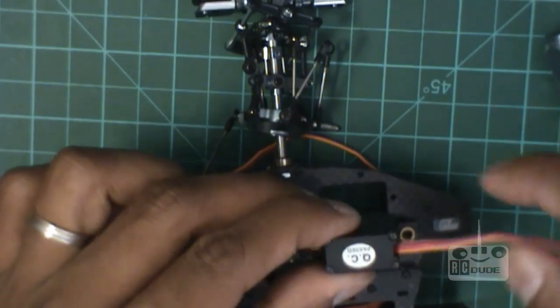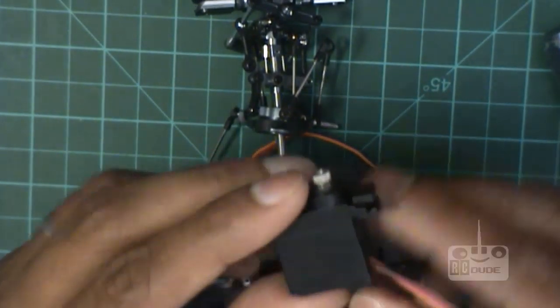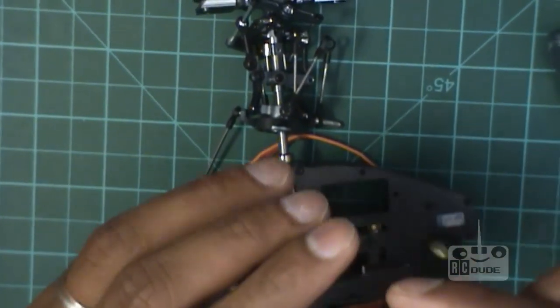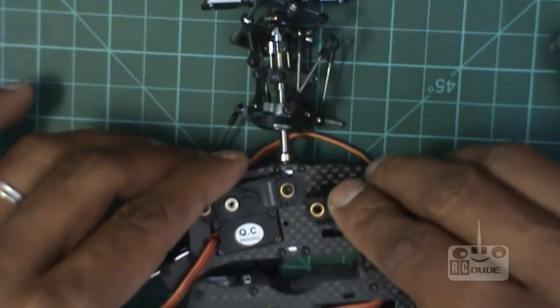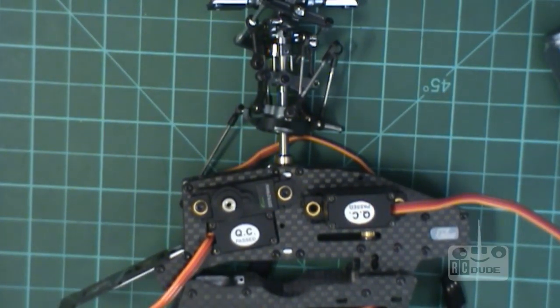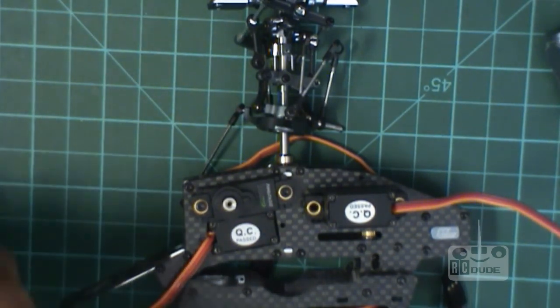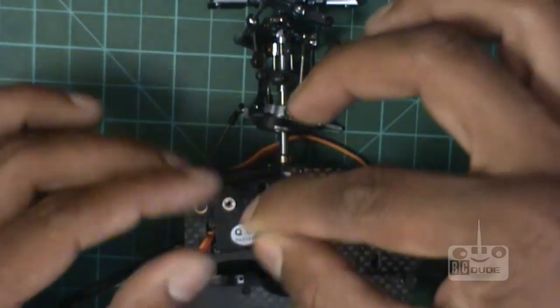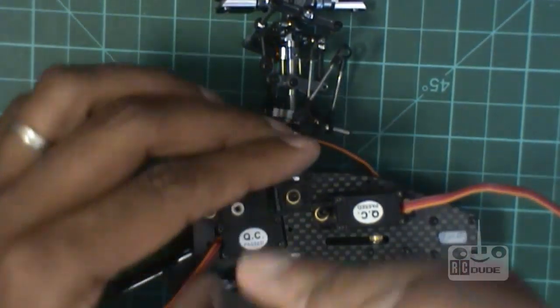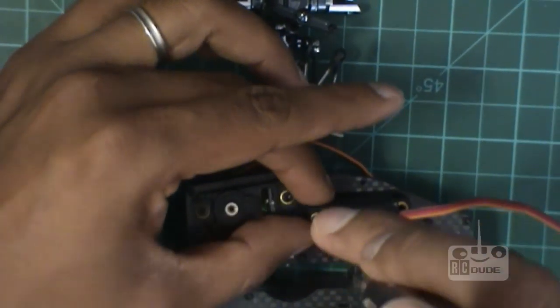You can drop this one. Have a look. This one, the servo direction, don't put like that because it's very close to your swash plate. So make sure you put this way and tighten this one too. Perfect.